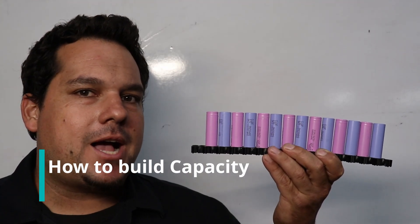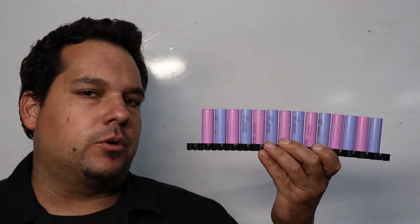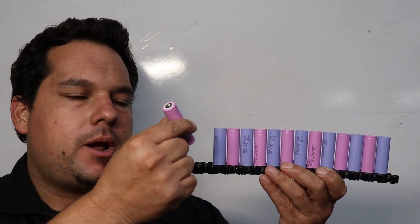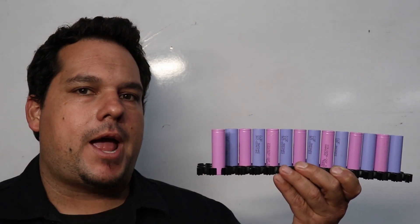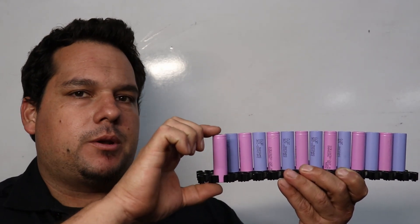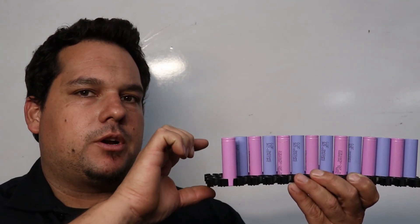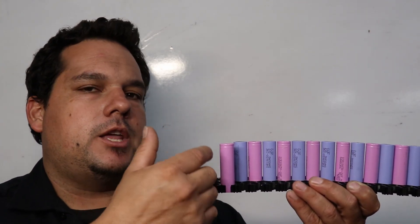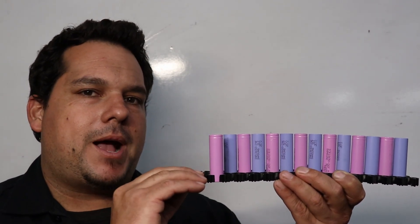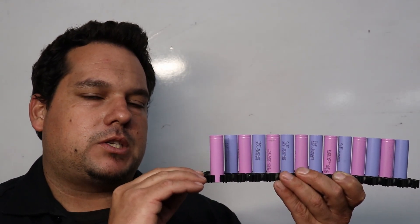So the way that they get more capacity out of a battery, let's say a 14S battery, is that they would run these cells in parallel. So what happens is you take, let's say, five of these cells in parallel, which means that all the positives and all the negatives are connected to each other, and then it's series over to the next bridge. So that's how you get more capacity out of a battery without stacking up voltage.